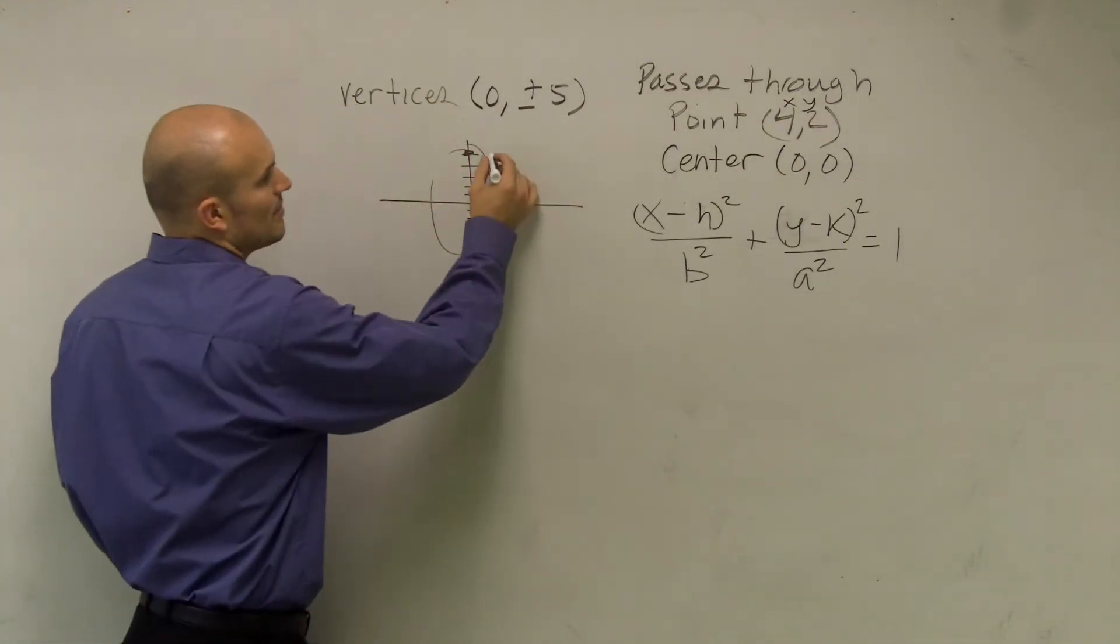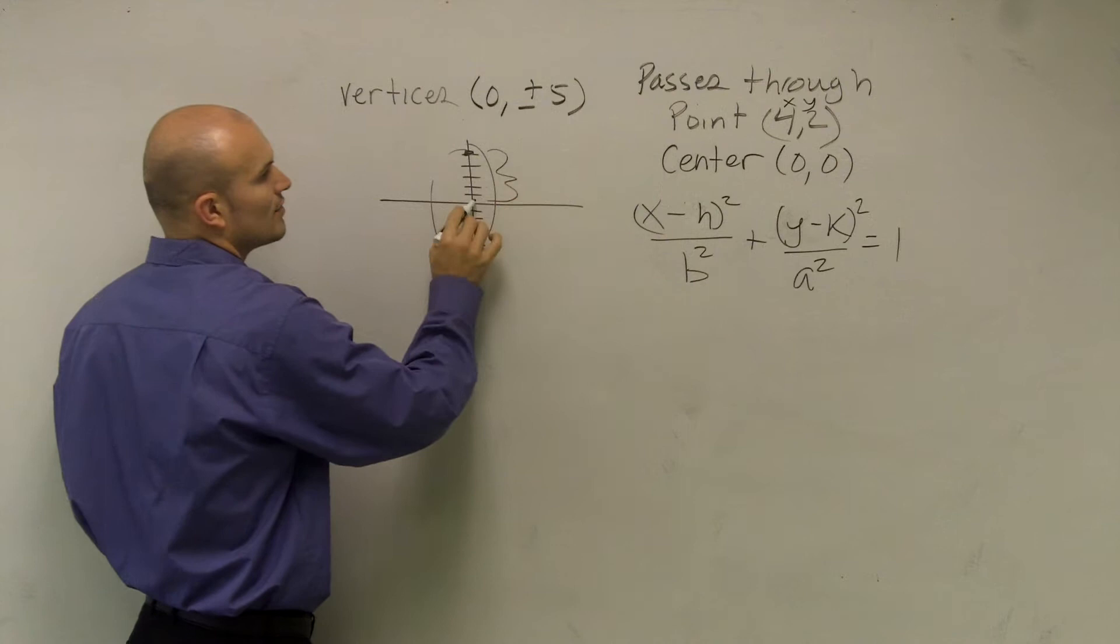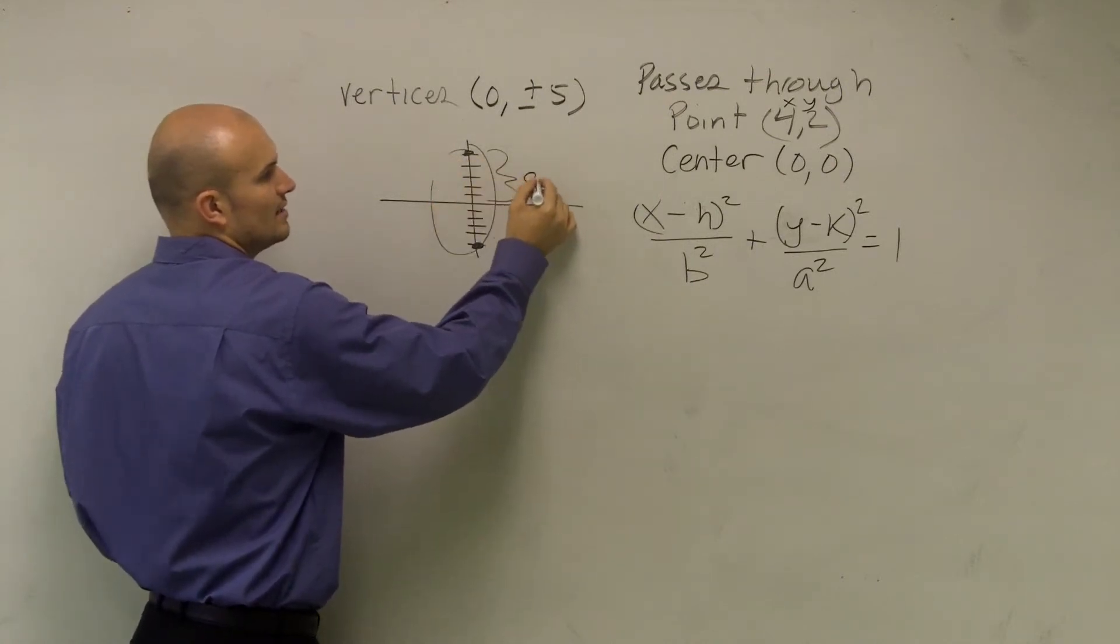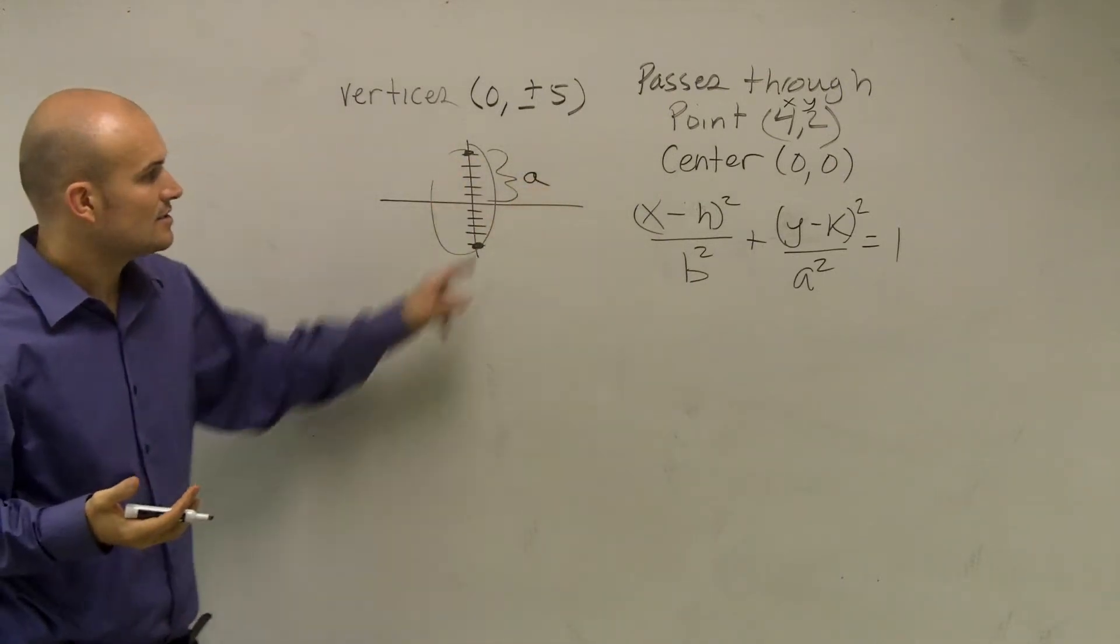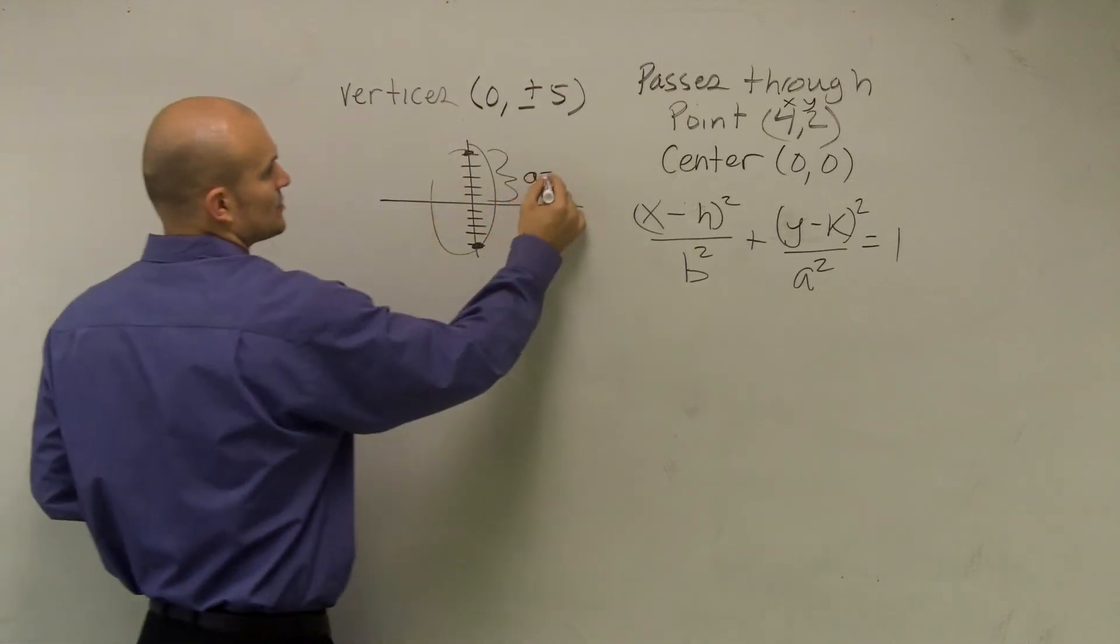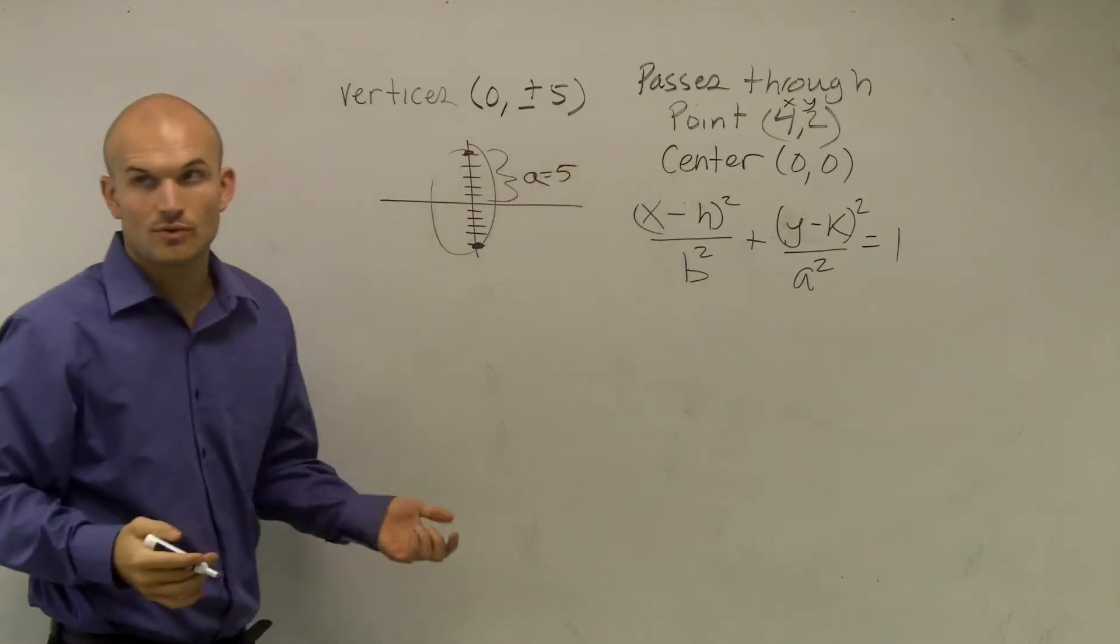Since we remember the distance from our center to our vertices is a distance of A, therefore I know A equals 5, so A² is 25.